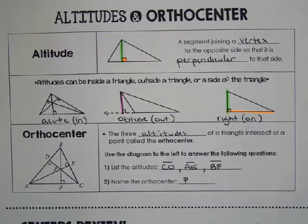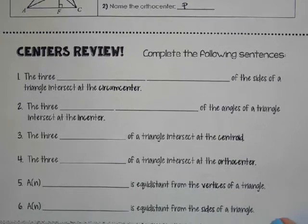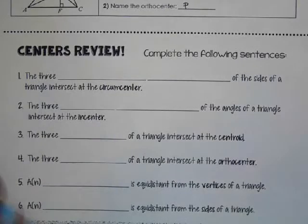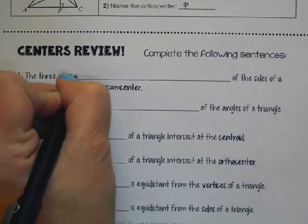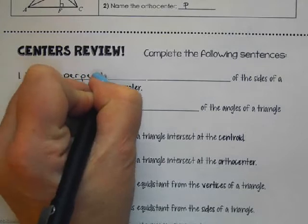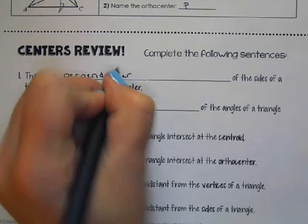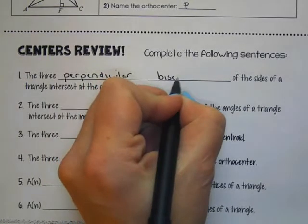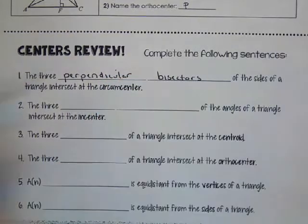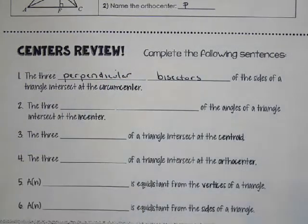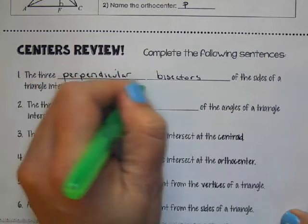So to review, this is all the vocabulary we need to remember. The three perpendicular bisectors with the sides of the triangle intersect at the circumcenter. So perpendicular bisectors, circumcenter.